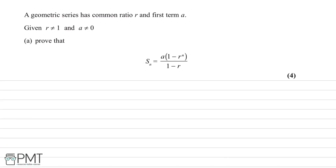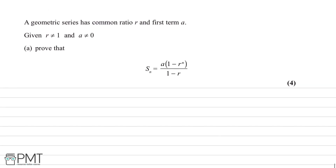In this question we're told that we have a geometric series with a common ratio of r and first term a. We're told that r is not equal to 1 and that a is not equal to 0. We're asked to prove that S of n, the sum of n terms, is equal to a multiplied by 1 minus r to the power of n, all divided by 1 minus r.